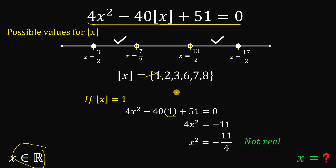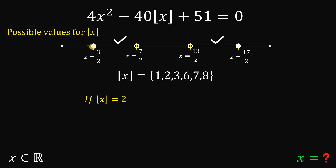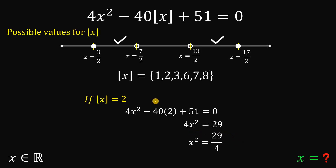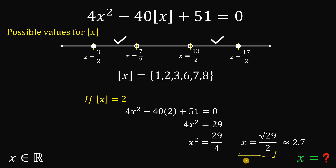Second case: the floor value of x equals 2. Our equation becomes 4x squared minus 40 times 2 plus 51 equals 0. Simplifying, 4x squared equals 29. Dividing both sides by 4 and taking the square root, since the floor value is 2 (positive), we want a positive value: x equals square root of 29 over 2, which is approximately 5.4 divided by 2, approximately equal to 2.7. Since 2.7 is between 1.5 and 3.5, we have found the first real value of x.